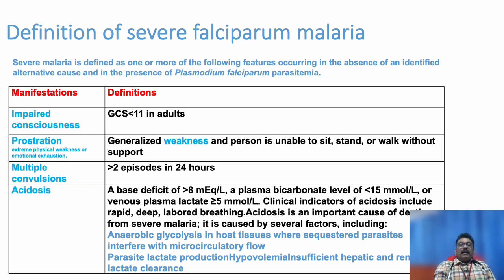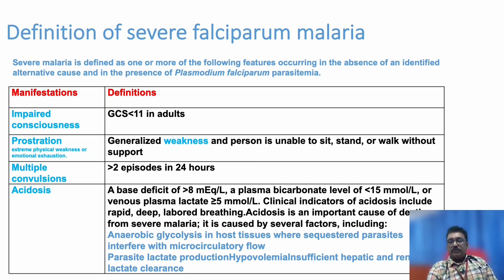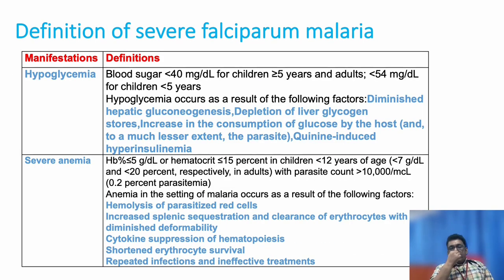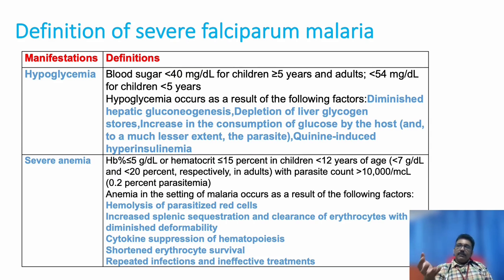Some patients can have acidosis because of microvascular collapse. There will be leakage from blood vessels producing vascular collapse, which leads to anaerobic metabolism and lactic acidosis. Acidosis is seen in many patients with falciparum malaria. Hypoglycemia is very common in malaria for multiple reasons: the malarial parasite itself utilizes large amounts of sugar, causing the patient to go into hypoglycemia.